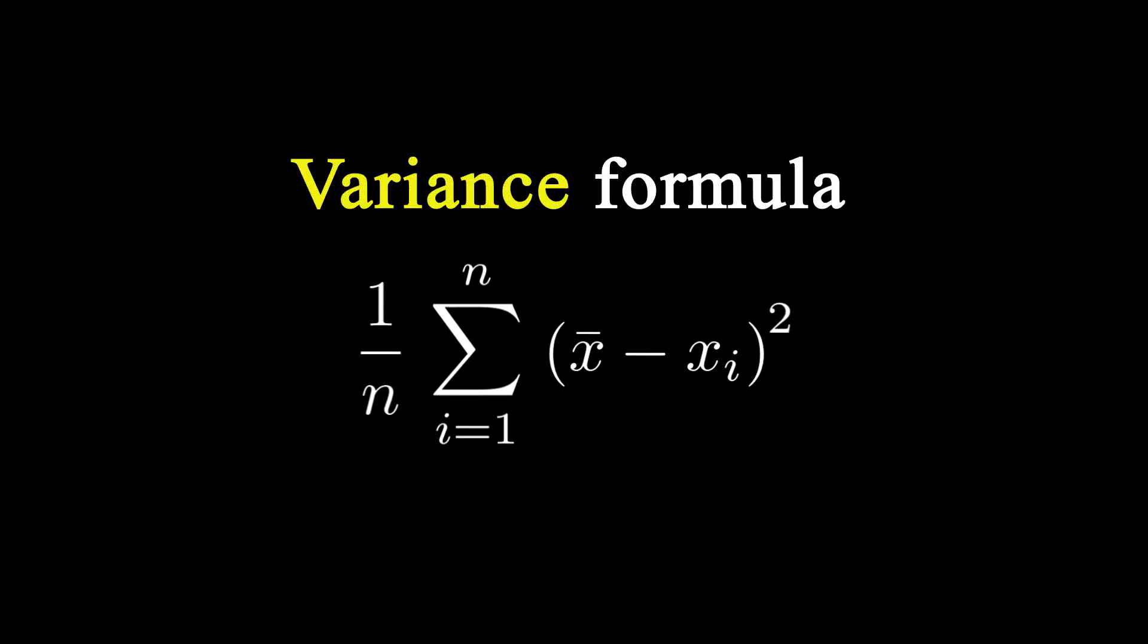Squaring those terms first assures that no error will cancel each other out, but most importantly, it will penalize the bigger errors. And voila, you just constructed variance, a statistical value of your distribution, telling you how values distribute around the mean.